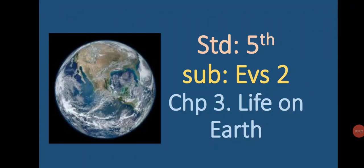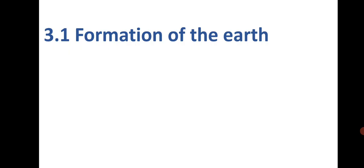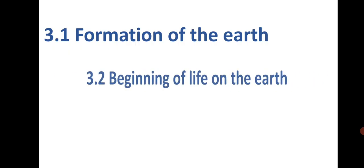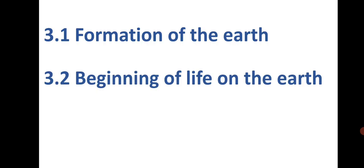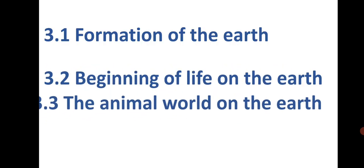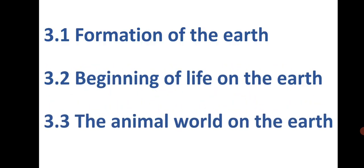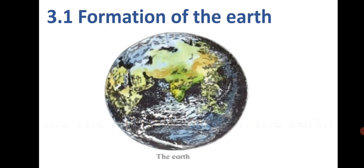Standard 5th, Subject EBS 2, Chapter 3: Life on Earth. Dear students, in this chapter we shall learn about three things: Formation of the Earth, Beginning of Life on the Earth, and The Animal World on the Earth. So let's begin with the first part, that is Formation of the Earth.